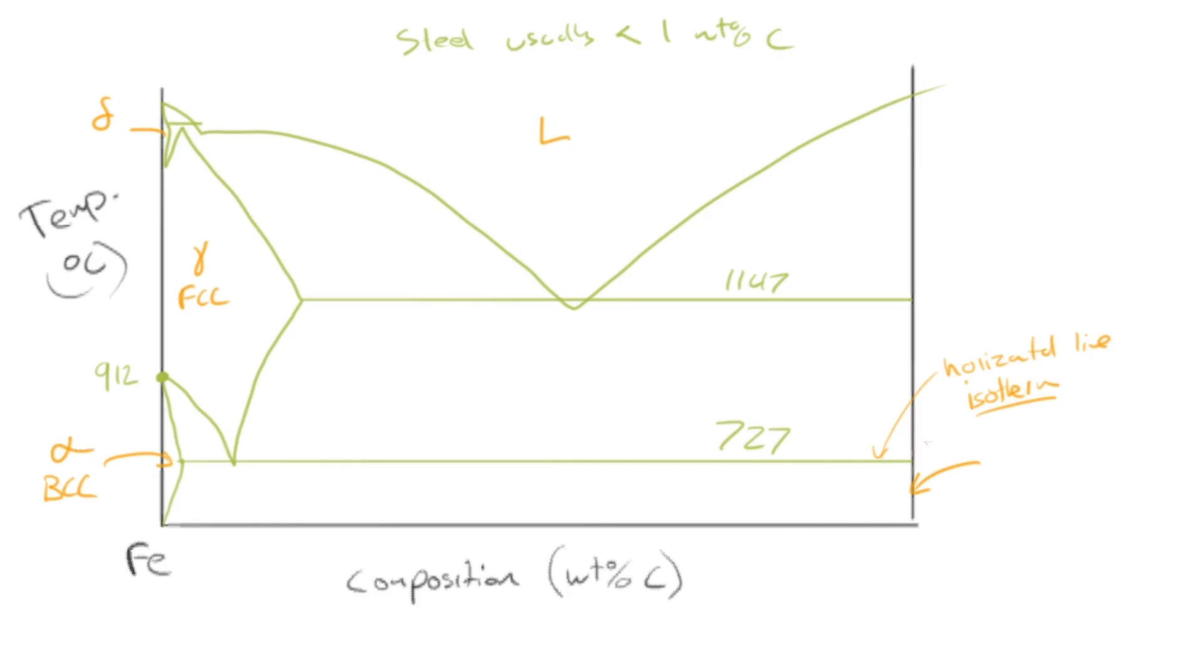So we don't go all the way out to 100% carbon. That wouldn't be useful to us. And it happens that there's a phase that forms out here at 6.7 weight percent carbon.